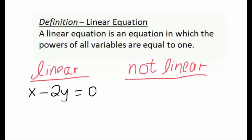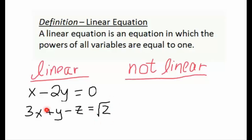First we have the equation x minus 2y equals 0. We look at our variables x and y and check if their powers are higher than or less than 1. In this case both powers are 1, so this is a linear equation. We're allowed to have different kinds of numbers like e, pi, or square root of 2 — those don't matter as long as the powers of our variables are 1. So the equation 3x plus y minus z equals square root of 2 is still linear.